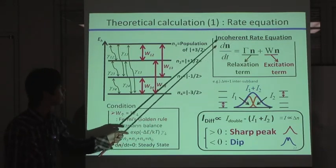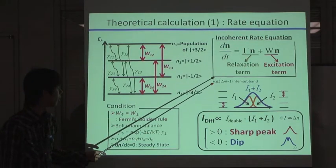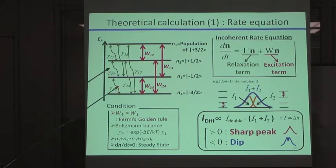By using this equation set, we solved based on the EPR conventional condition like this. And we obtained the steady state population distribution. And after that, we calculate the EPR intensity.